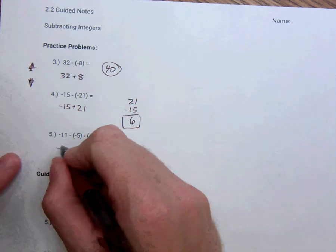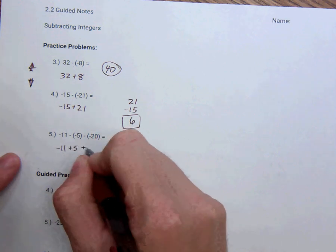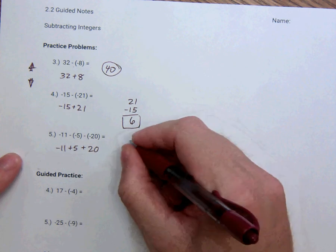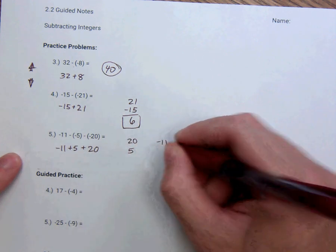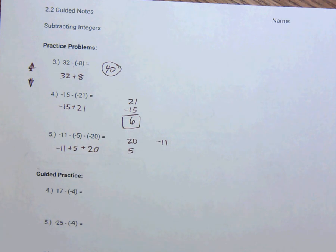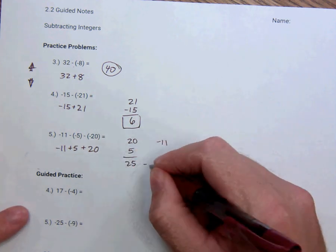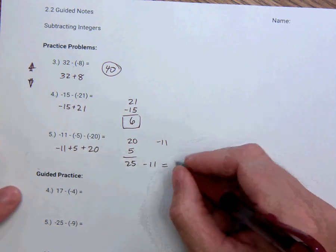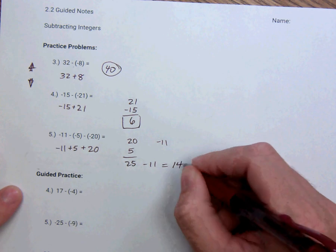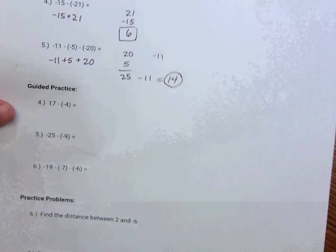So I'm going to rewrite this negative 11. Negative of a negative becomes positive five. Negative of a negative becomes positive 20. And remember, I like to put the positives and the negatives like separate categories and then complete after that. So I have 25 over here minus 11. 25 minus 11 is 14. All right. Got it. Practice. I got two more problems here at the bottom.